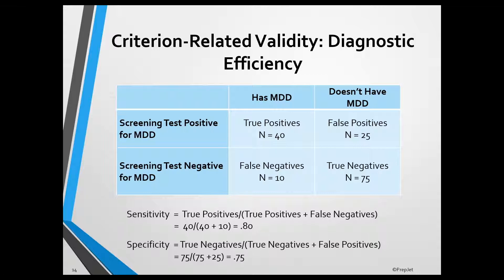For the exam, you want to be familiar with the definitions of true positives, false positives, true negatives, and false negatives. True positives are individuals identified by the screening test as having the disorder who in fact do have the disorder, while false positives are individuals identified as having the disorder who in fact do not. True negatives are individuals identified as not having the disorder who in fact don't have it, while false negatives are individuals identified as not having the disorder who in fact do have it.